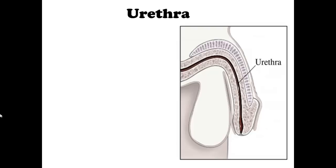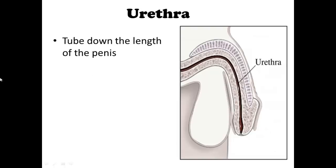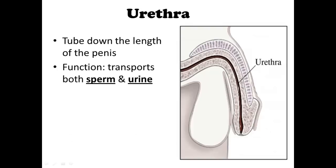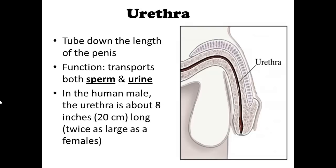Next we're going to talk about the urethra. It is the tube that runs down the length of the penis. It has two functions: it transports both sperm and urine. In the human male, the urethra is about eight inches long — twice as long as it is in females. Females also have a urethra to transport urine from their bladder.